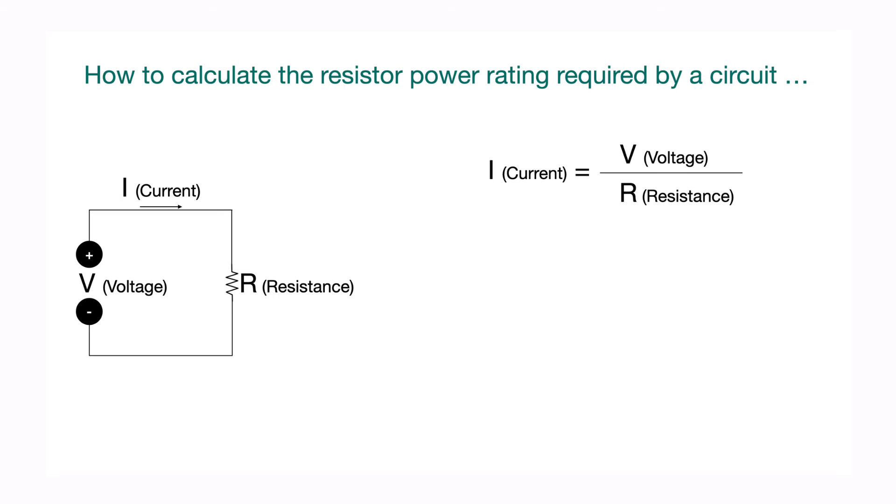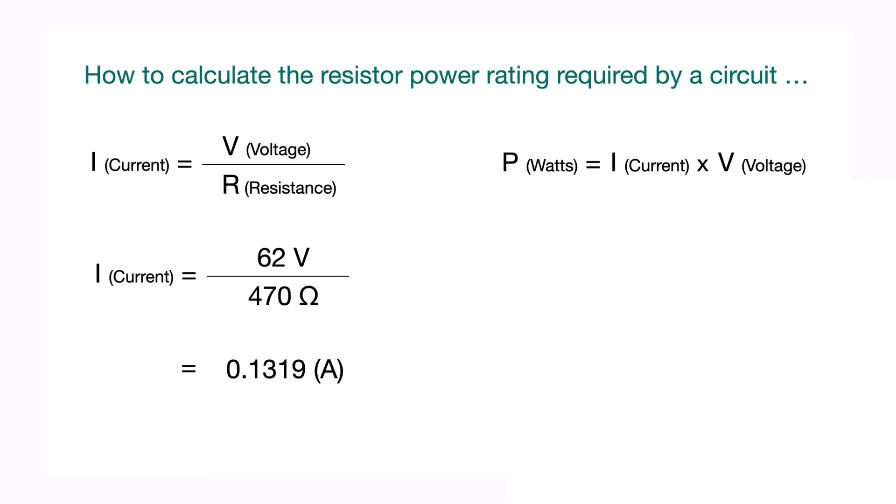You can calculate the power that a resistor in your circuit will be expected to handle by applying Ohm's law. First we just need to calculate the voltage across the resistor and the current that will pass through it. In this circuit we had a 470 ohm resistor attached to a 62 volt power supply. You can calculate that roughly 0.13 amps of current will flow through the resistor by dividing the voltage by the resistance. So 62 volts divided by 470 ohms gives us roughly 0.13 amps, or about 132 milliamps. Once you know the voltage and the current, you can calculate the power that will be dissipated by the resistor by using the formula P equals I times V, or power equals current times voltage. So 0.13 multiplied by 62 volts gives us roughly 8.2 watts.